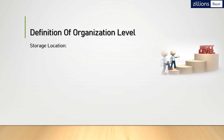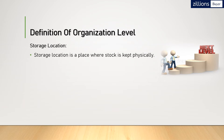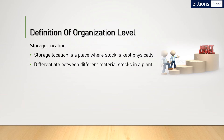The fourth level is storage location. A storage location is a place where stock is kept physically — it is the physical location where you keep your products. Storage locations are used to differentiate between different materials or stocks within the plants.